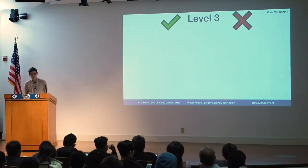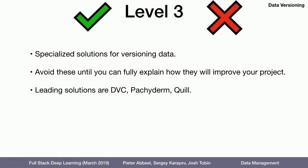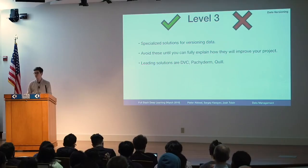Lastly, there's level three, which is a specialized solution for versioning data. I would avoid these until you've tried level two and can explain how level three will improve your life. But some names to know: DVC, Pachyderm, and Quill. You can do a little research into those and see if they make sense for you.